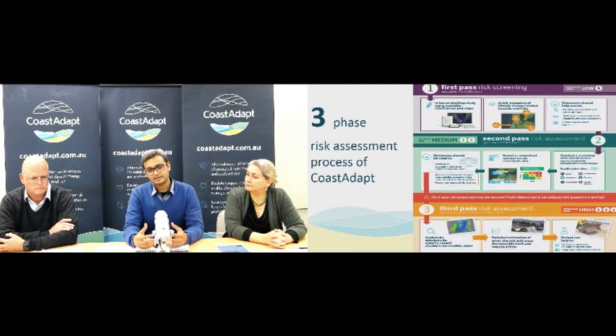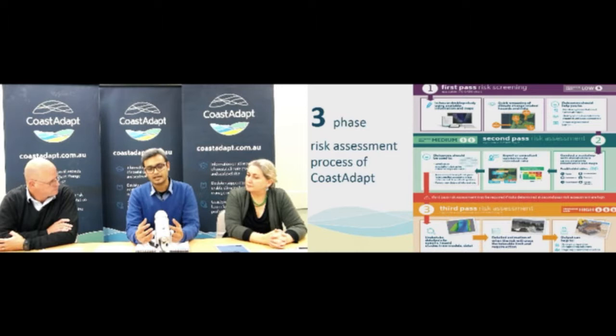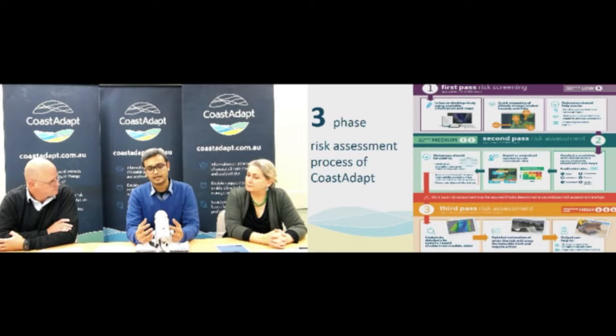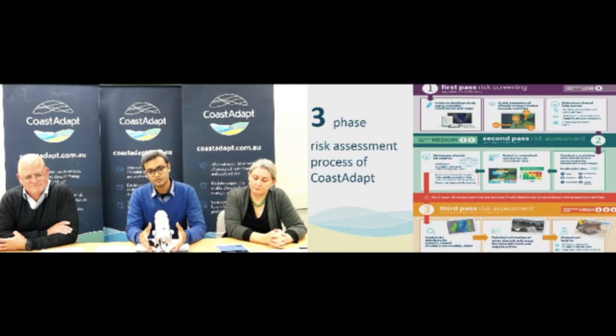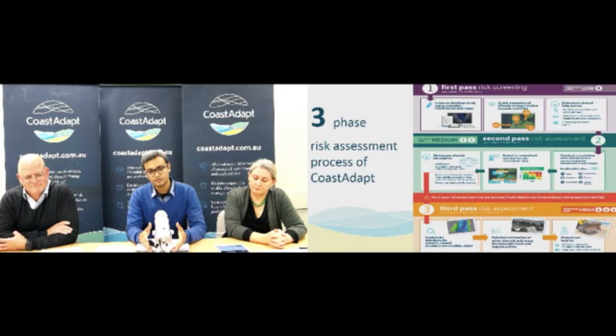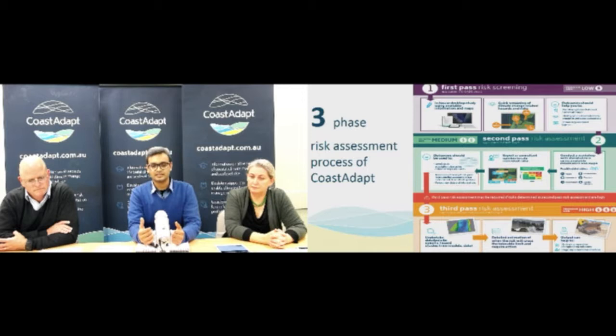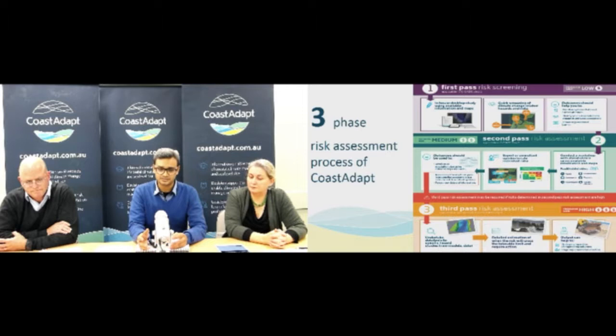Once you've identified the relevant stakeholders through fast pass risk screening, second pass risk assessment is about getting those stakeholders in a room and conducting a risk workshop where you identify specific risks and then go through the likelihood and consequence of each risk and come up with a risk register. The risk register will essentially tell you that some risks are more important and some are not so much. As you identify any critical risk through second pass risk assessment, third pass assessment is about narrowing down to that particular risk at a site-specific level and engaging a consultant to commission hazard studies, so they can build biophysical models and tell you more detail about the rate and approximate timeframe of future changes, so that you can start thinking about thresholds and triggers that you can ultimately use for planning your adaptation actions.